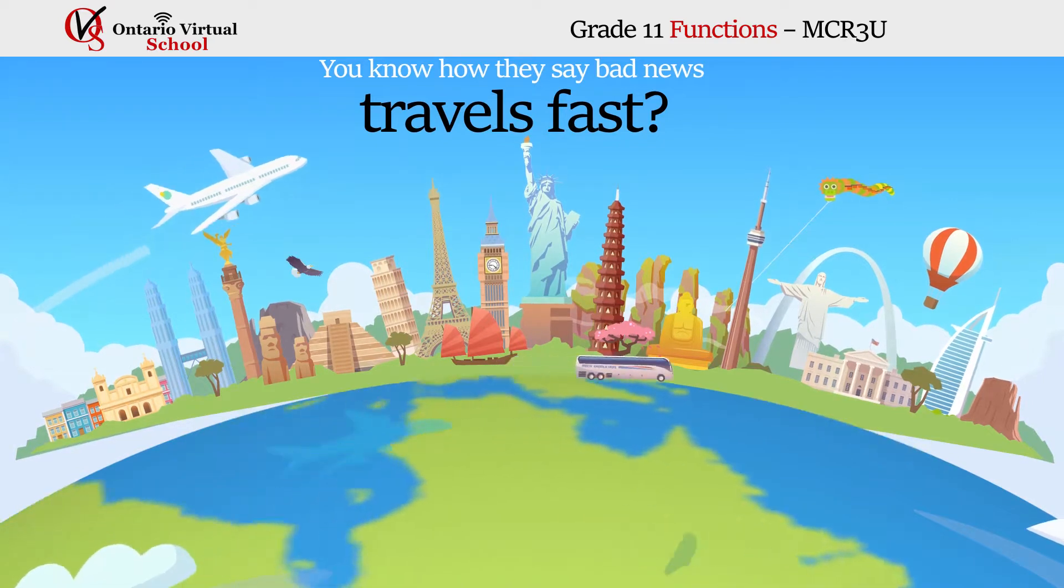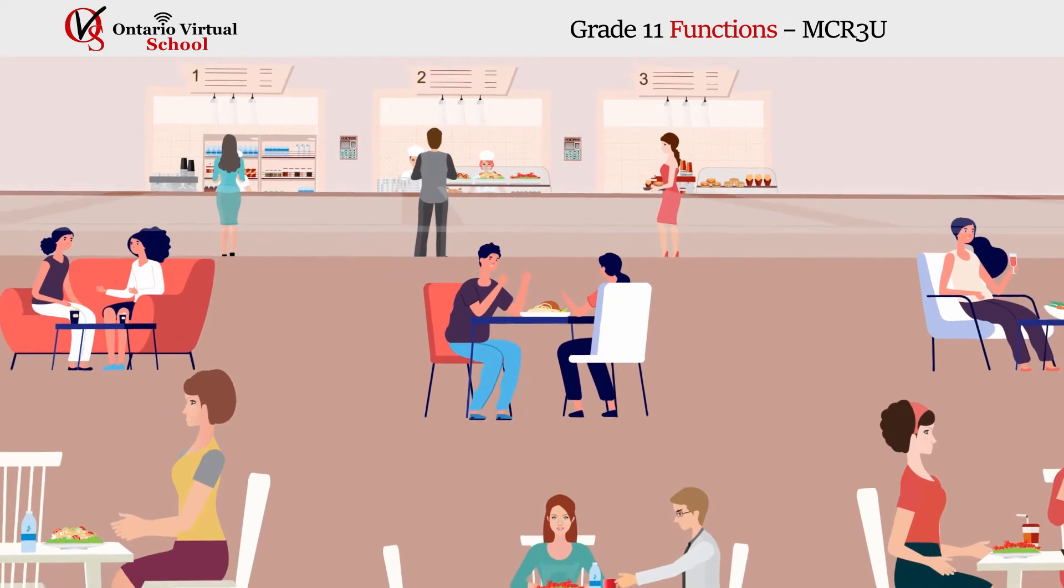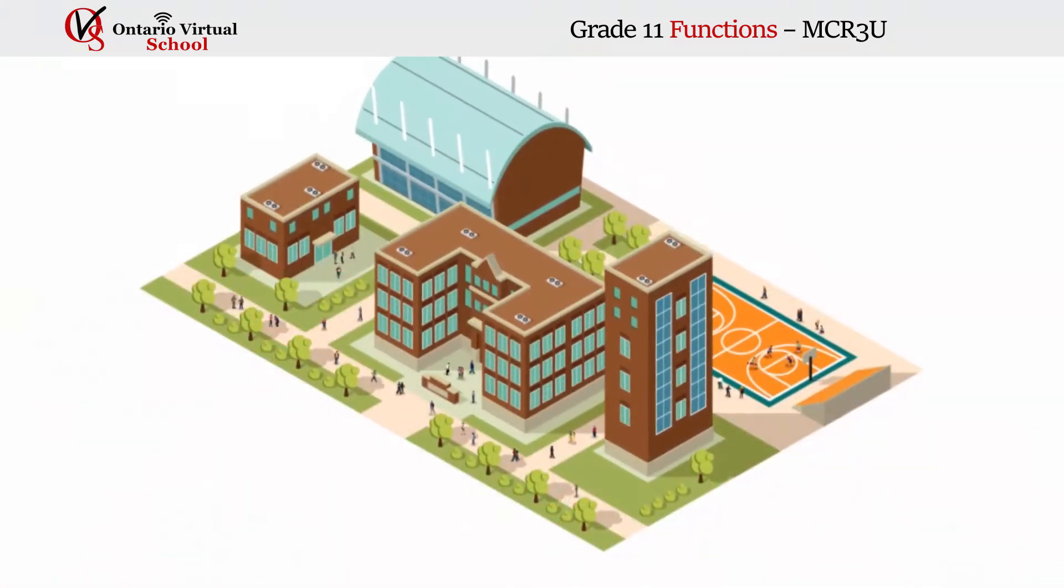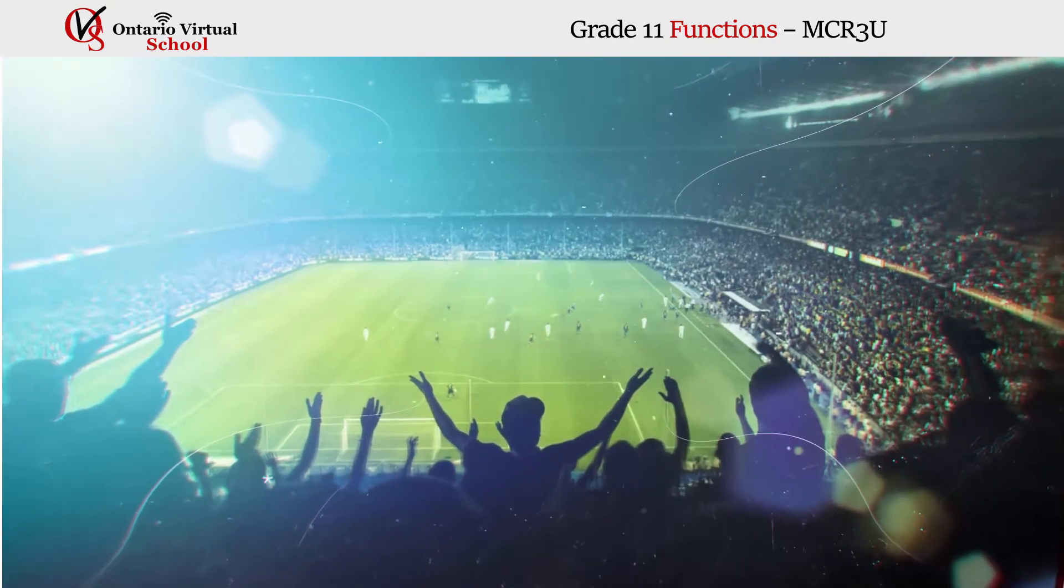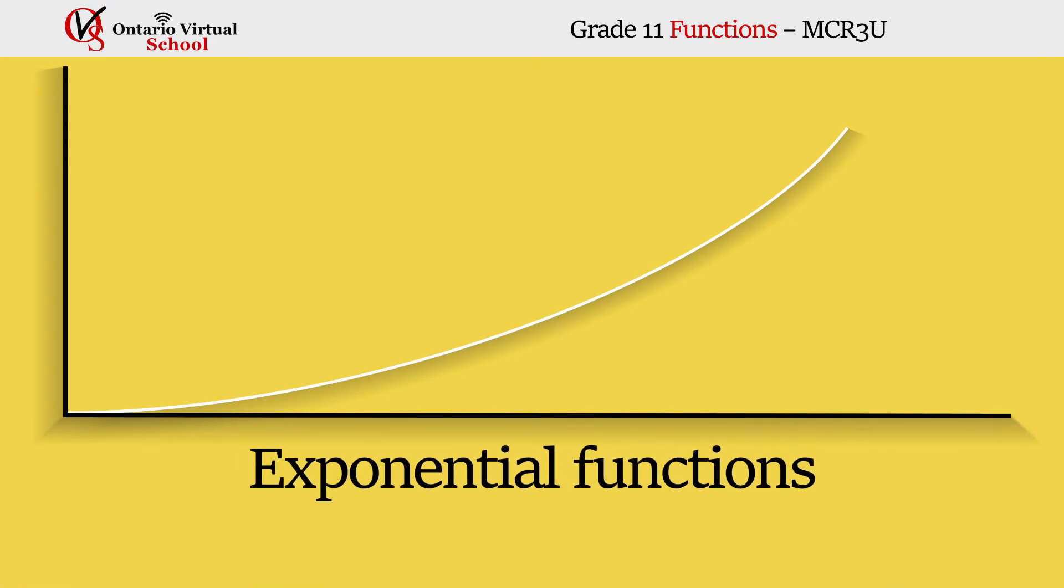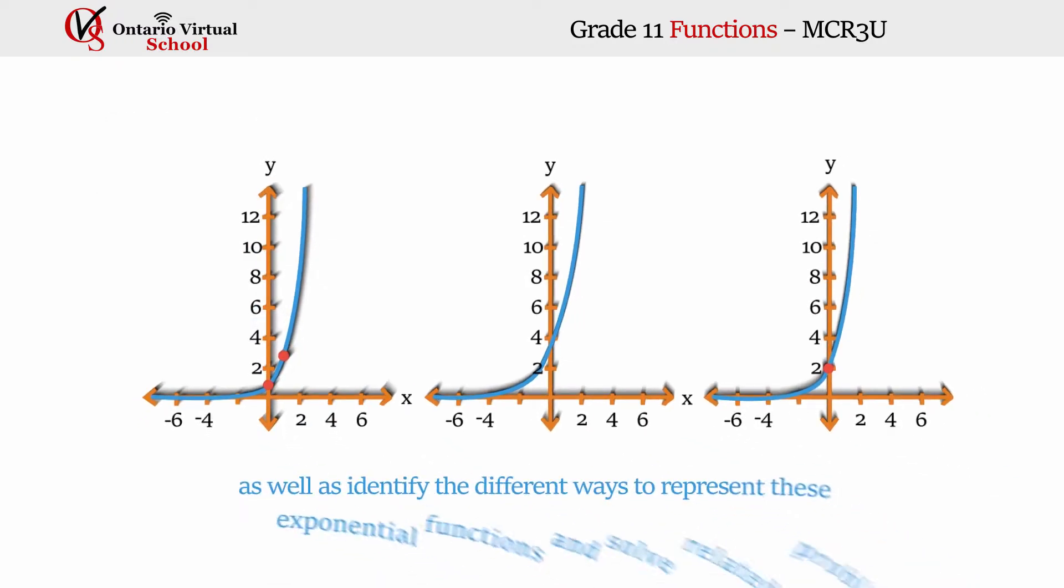You know how they say bad news travels fast? One person tells their friend a secret, then that friend tells some other friends at lunch, and so on, until the whole school and their mother knows that Sally dumped Joe at the football game. Well, the way gossip like this spreads is just one example of the many everyday phenomena that can be modeled using exponential functions. In this unit, you will learn how to simplify and evaluate expressions involving exponents, as well as identify the different ways to represent these exponential functions and solve related problems.